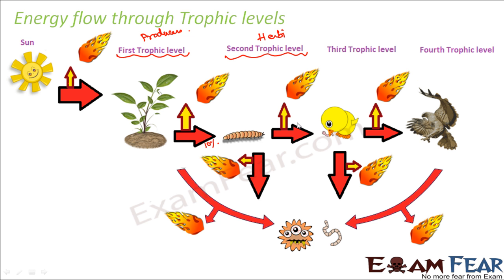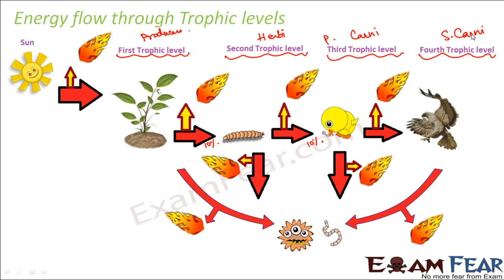These insects are in turn eaten up by the third trophic level — the primary carnivores. Here also some amount of energy is lost, so around 10% of energy is passed on to the primary carnivores. Similarly, the fourth trophic level is occupied by the secondary carnivores — here it is a hawk. Some energy is lost as heat and around 10% reaches this level.